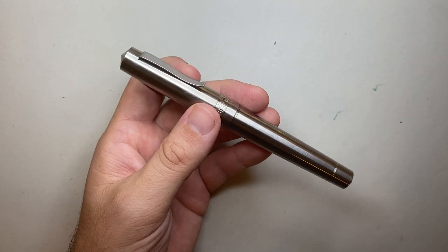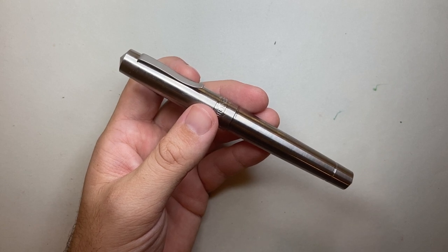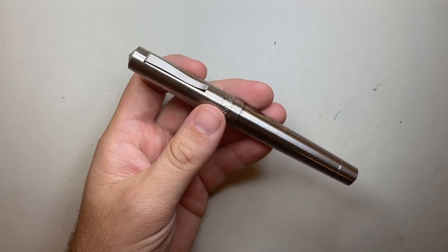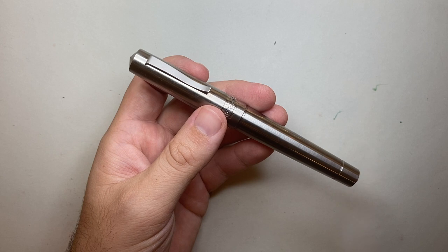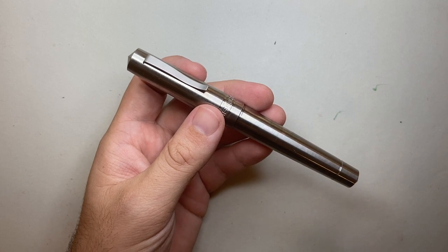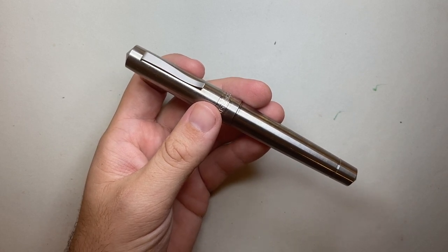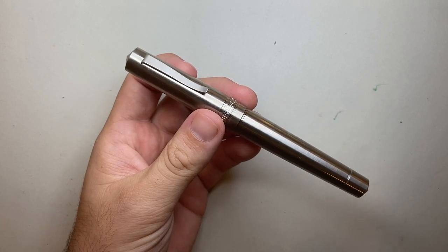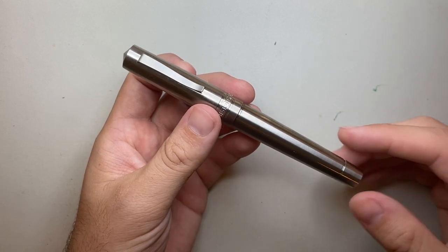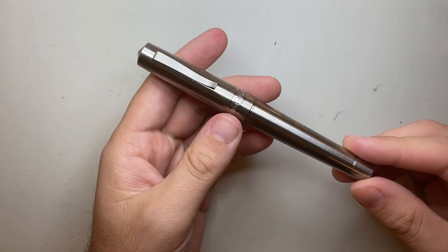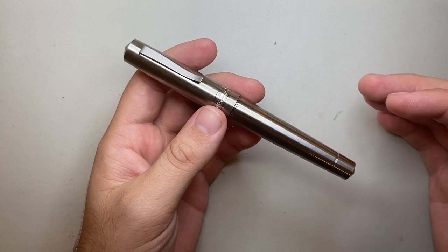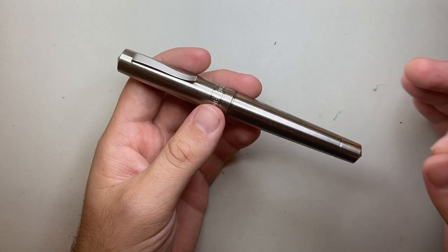Let's talk the price now. This pen retails on the Enso website for about US$129. For a titanium pen with a Bock nib and a Schmidt converter, I think that's actually a pretty good deal. There are certainly pens that cost a lot more that come with a lot less. That price is roughly, in Australian money, about $170, which puts it in a really interesting price point and one that I think is 100% appropriate for this pen.